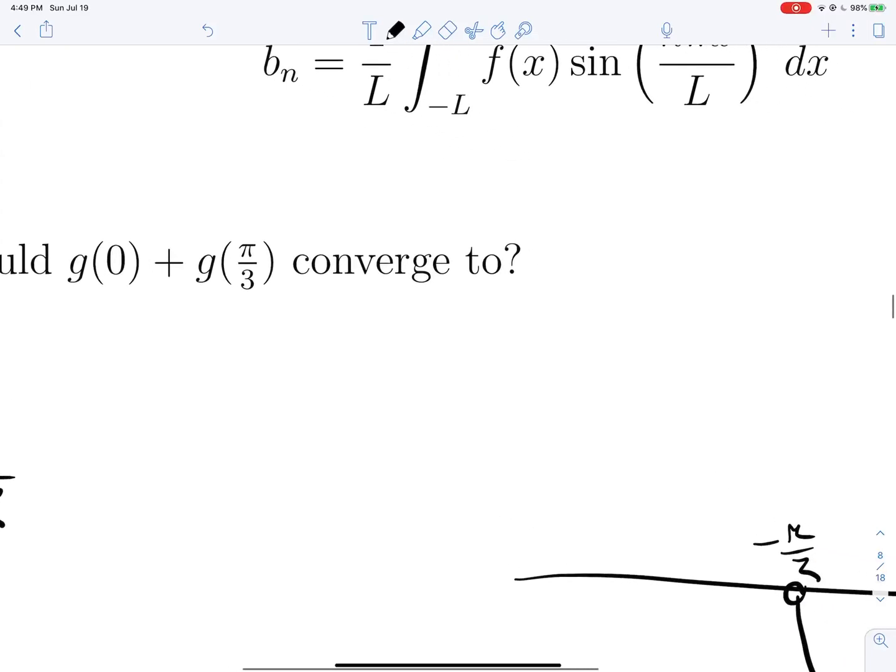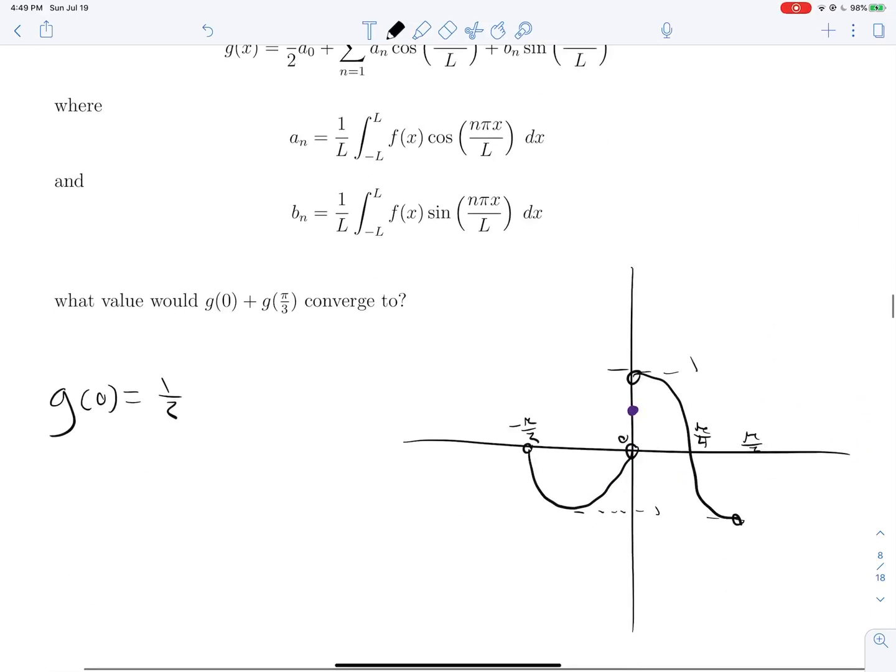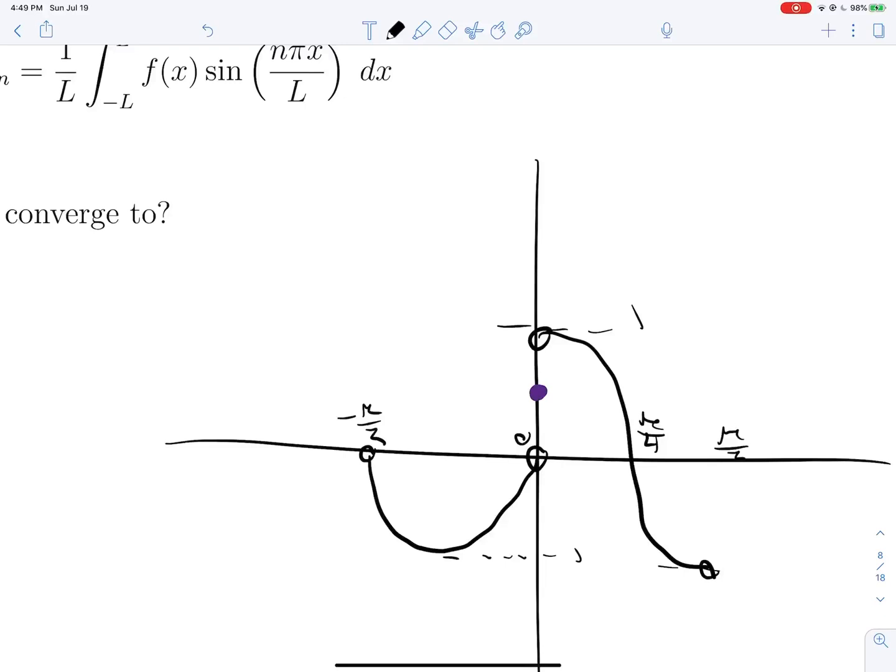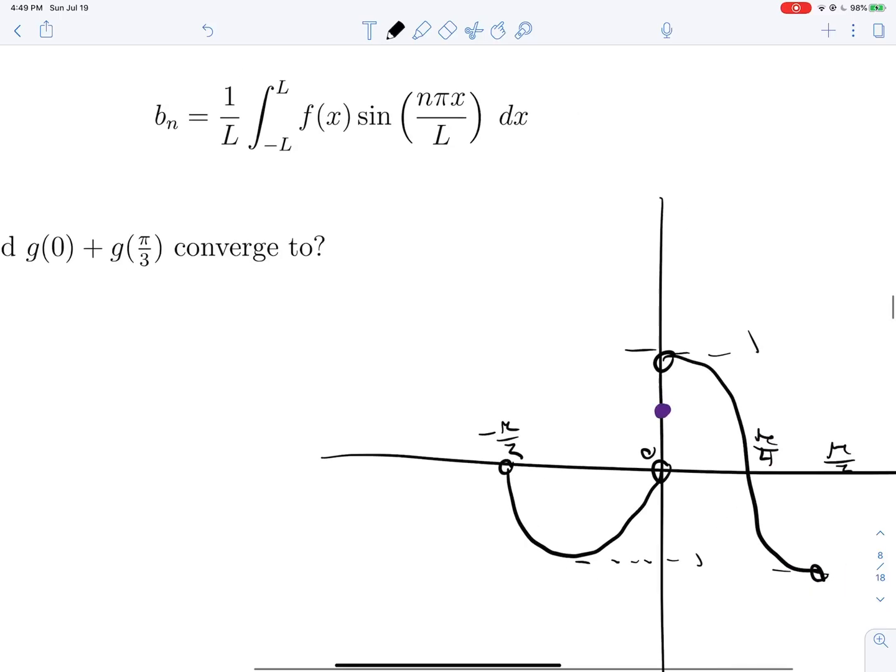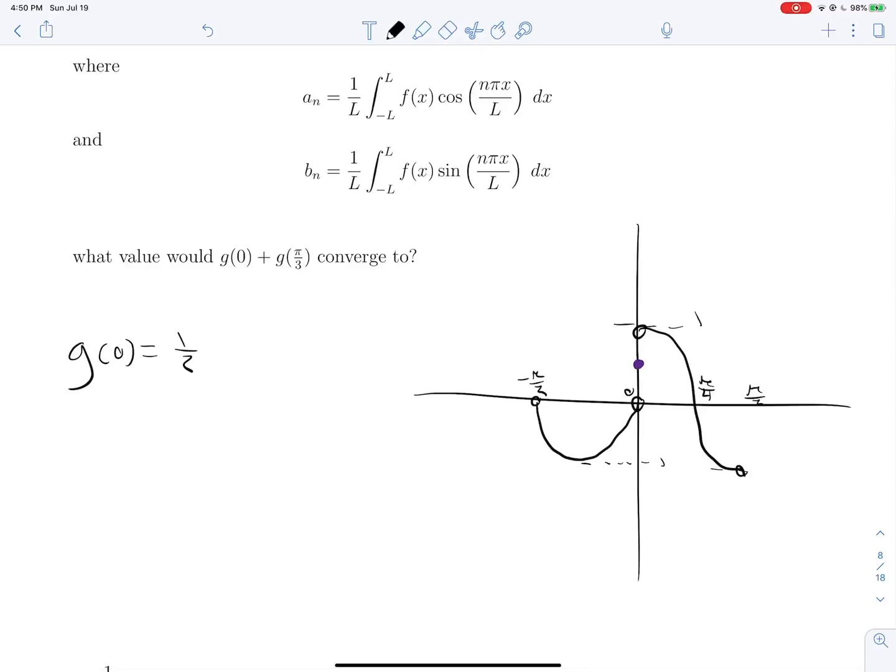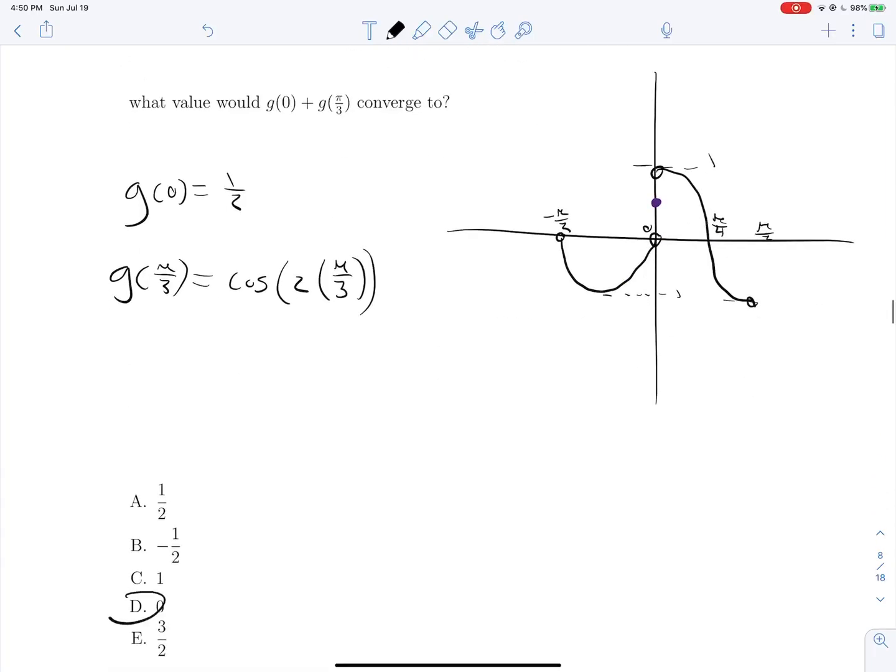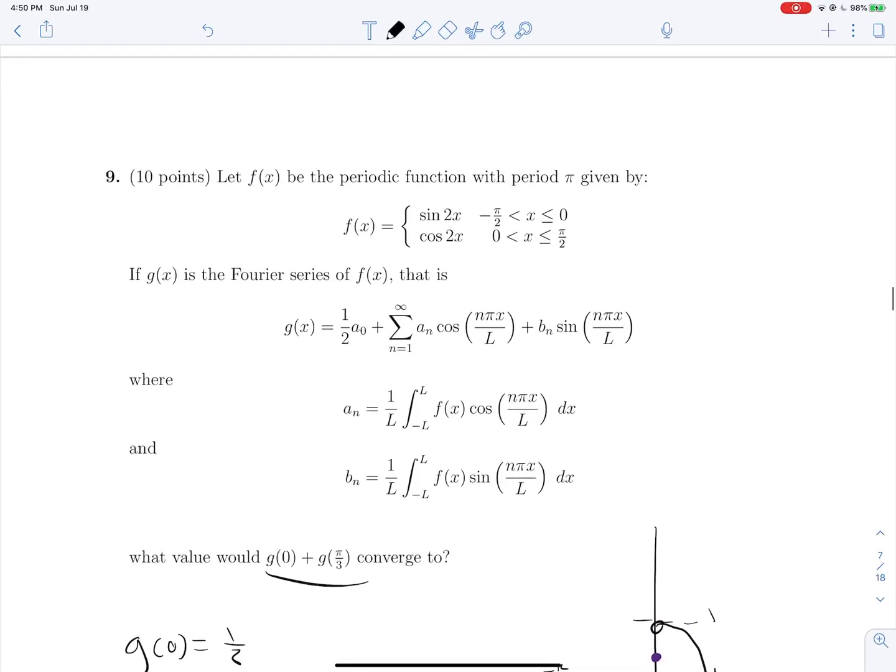Then what would g(π/3) be? Well, the nice thing is we don't actually need to use any of these formulas. We don't need to compute a Fourier series because everywhere else that's not a discontinuity, the Fourier series will get infinitely close to what the functions that the Fourier series is approximating. So g at π/3, that's going to land us in this region. So really, we're just evaluating the cosine of 2 times π/3. The cosine of 2π/3 will be negative 1/2. So we end up with the answer of 0 if we're adding these together like they want. So that's number 9.